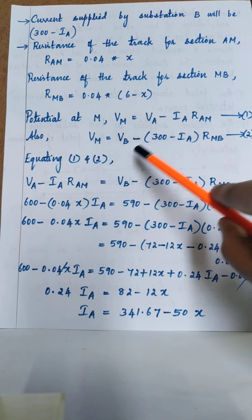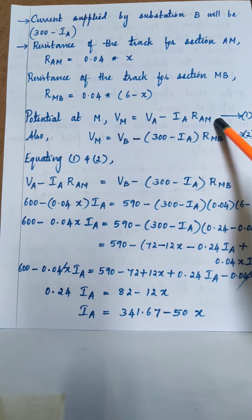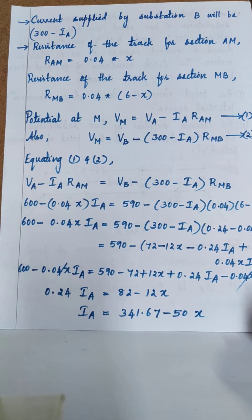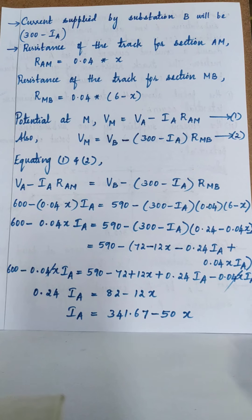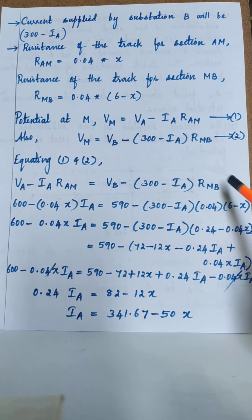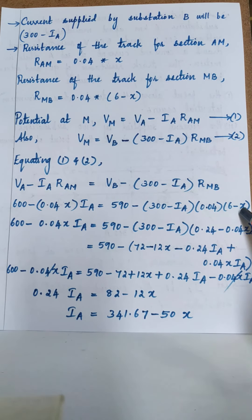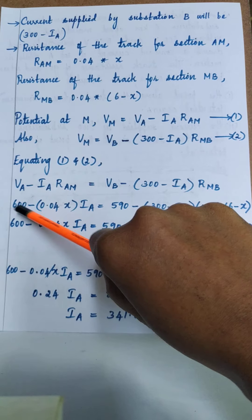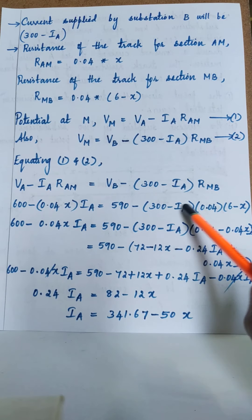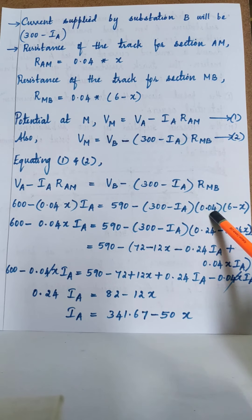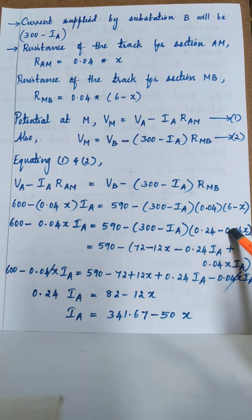Both equations must be equal, so equating them: Va minus Ia times Ram equals Vb minus (300 minus Ia) times Rmb. Substituting the values — Ram = 0.04x, Rmb = 0.04(6 minus x), Va = 600 V, Vb = 590 V — and expanding the right-hand side: (300 minus Ia) times 0.04(6 minus x) gives 0.24 minus 0.04x times the bracket terms.